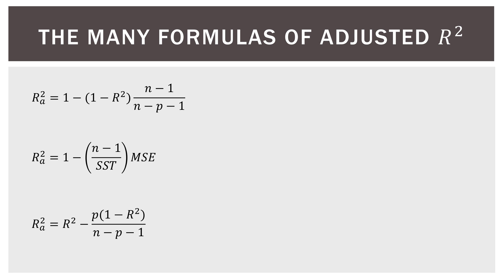It doesn't really matter which one you use as long as you have all the things you need to calculate it. R-square in these formulas is the R-square of the model we're looking at. N is the number of observations — in this case it's 100. N minus P: the P is the number of variables in the model, which in this case is three.